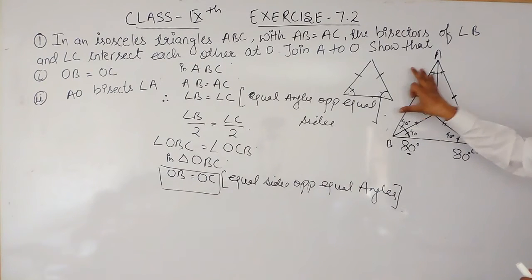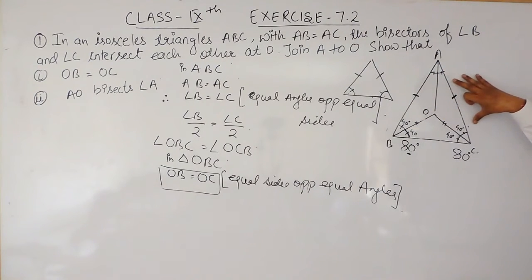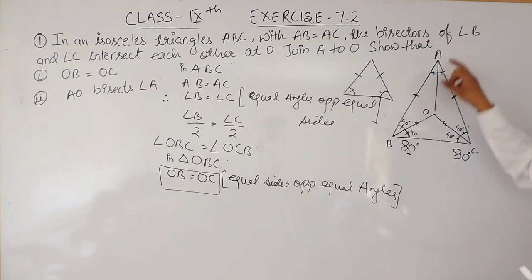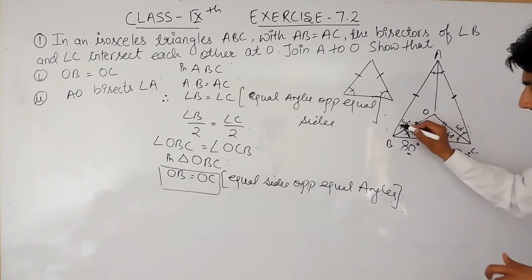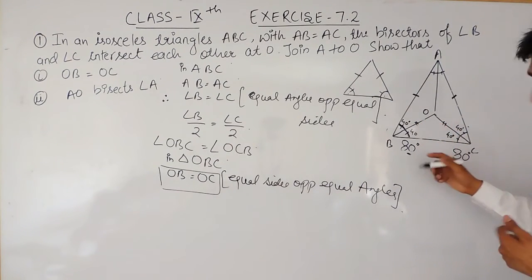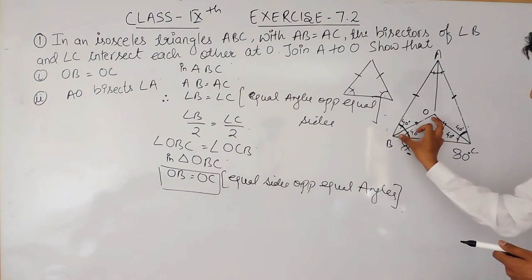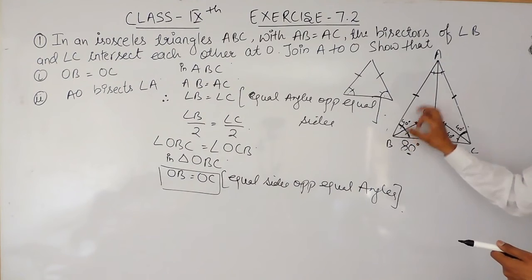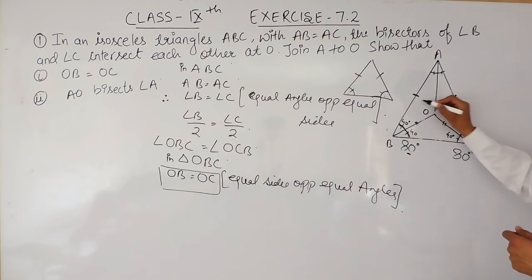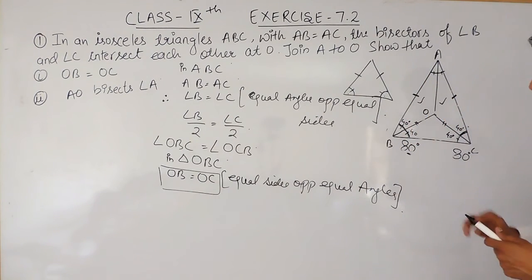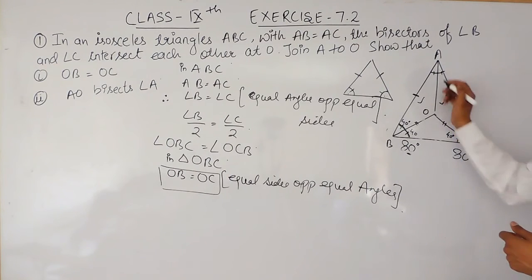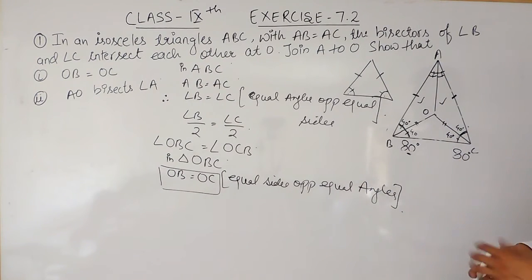To prove these two triangles congruent: the side OB of triangle AOB equals OC of triangle AOC — this we have already proved. AB equals AC — this is already given. And angle ABO equals angle ACO — these two angles are equal because they are the half-angles of angle B and angle C, which we proved equal. So by Side-Angle-Side, we can prove these two triangles congruent.